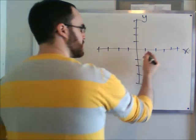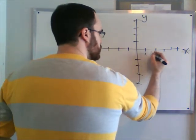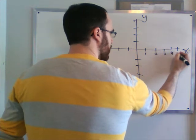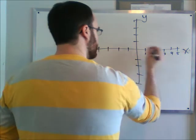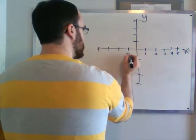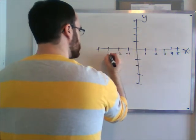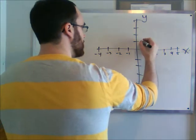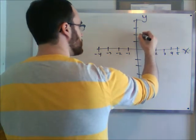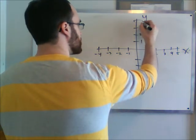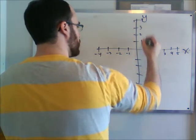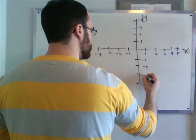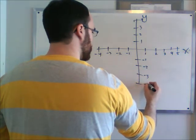So let's put some numbers on here. This would be one, two, three, four, and five. This would be negative one, negative two, negative three, negative four. This would be plus one y, two, three, and four. And this would be minus one, minus two, minus three, minus four.